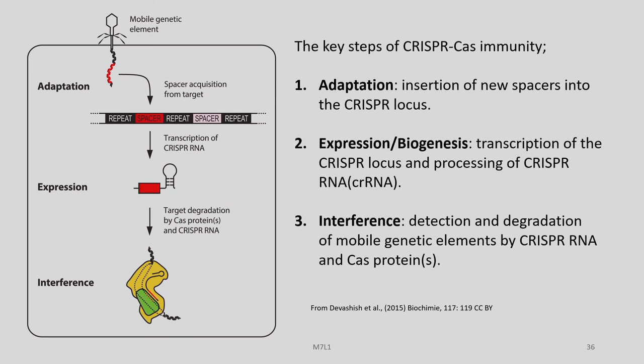In the expression and biogenesis stage, transcription of the CRISPR loci and processing of CRISPR RNA takes place, and this is again dependent on the class and type. In certain types, cascade will be involved; in certain other types, Cas9 will be involved and so on. In interference, the bacteria detects and degrades the mobile genetic elements by CRISPR RNA and Cas9 in later encounters.